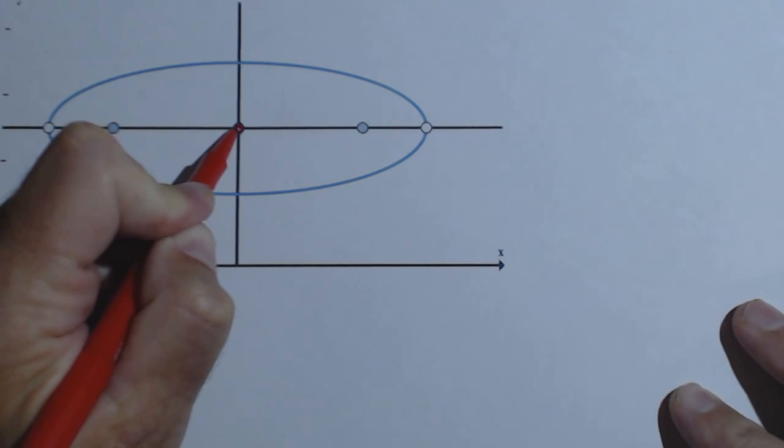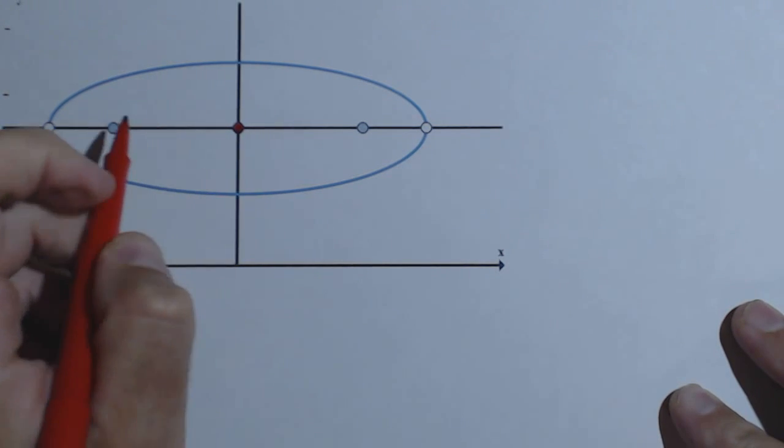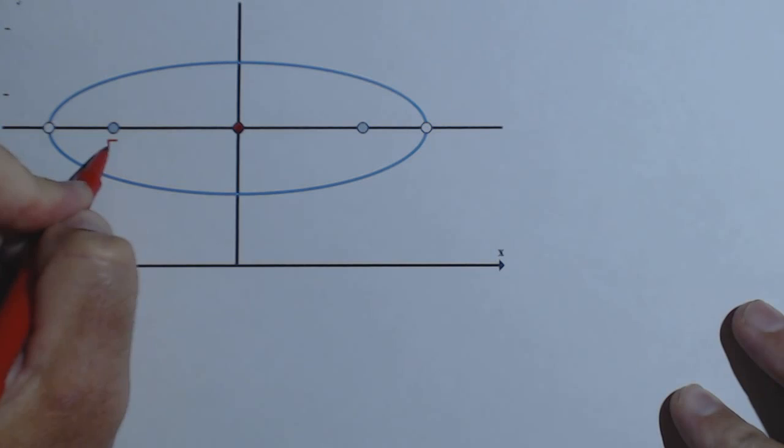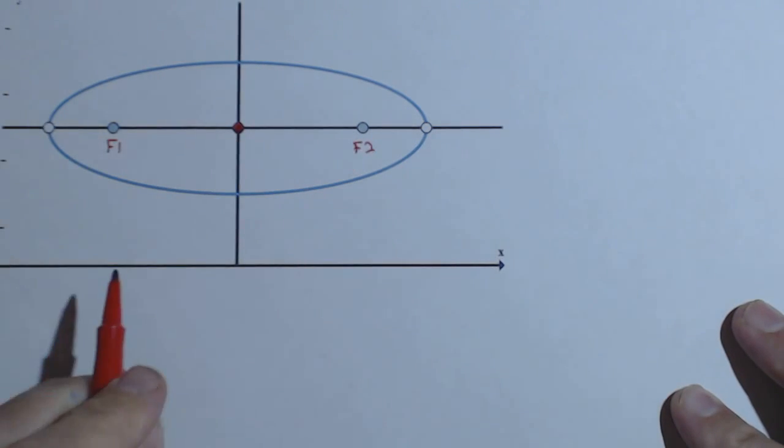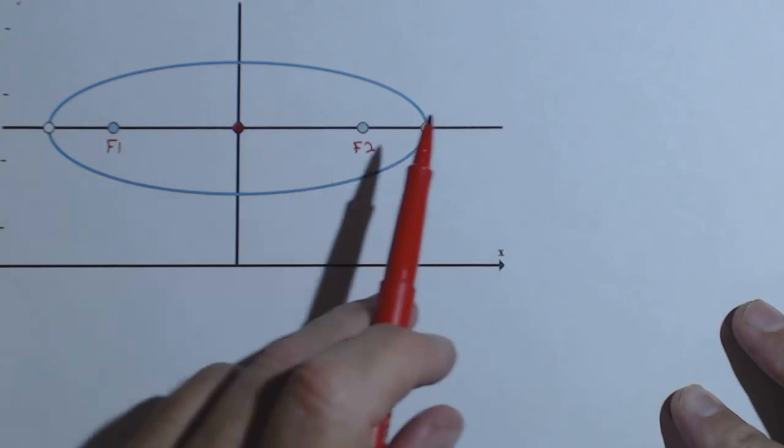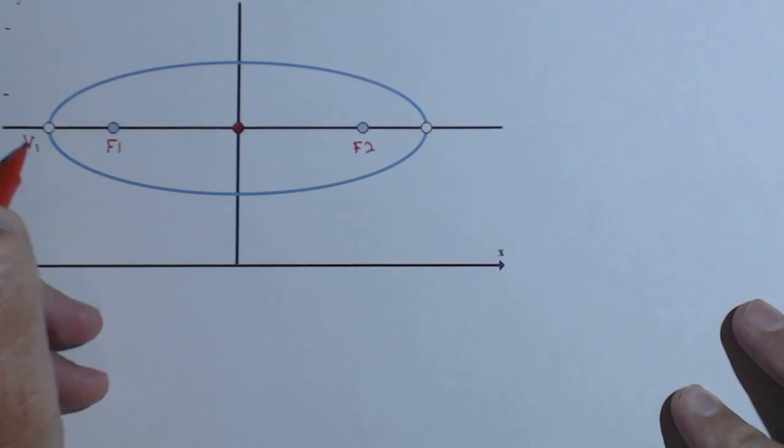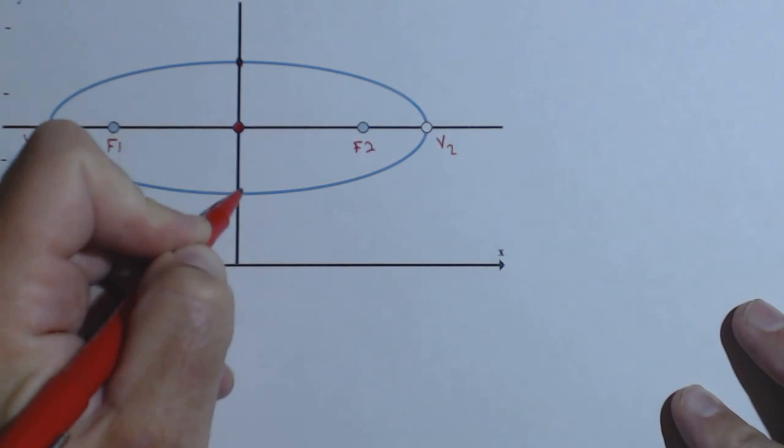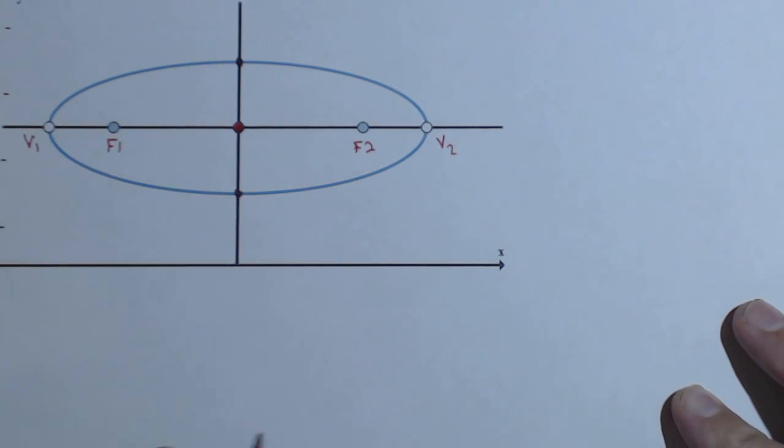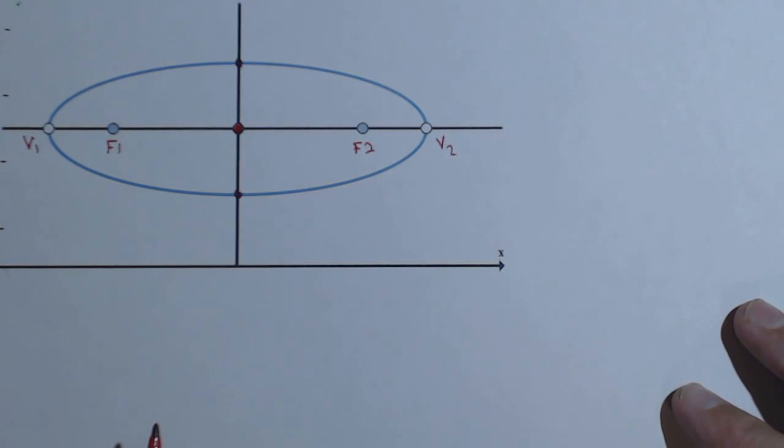We see it's got its center here, right in the middle. It's got two foci, we'll call them F1 and F2. It's got vertices here on the ends, V1 and V2. And then it's got co-vertices here that are on the narrower end on that axis.